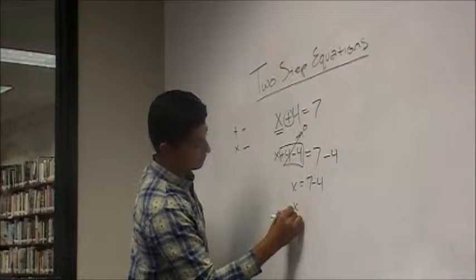And then, from here, it's easier math, which would just be 7 minus 4, which is 3.